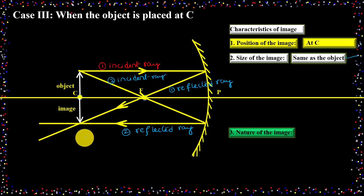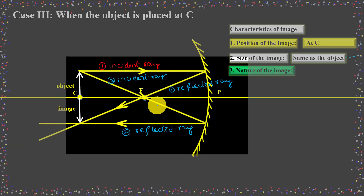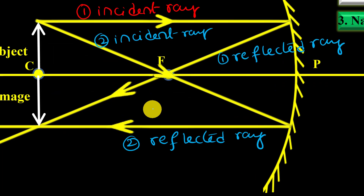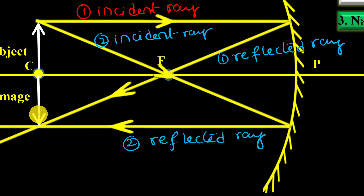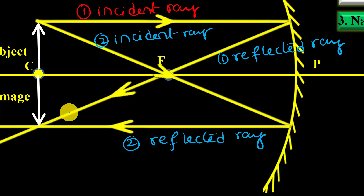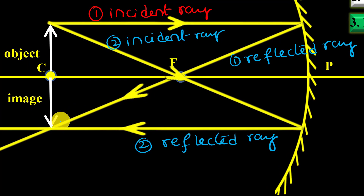Next, the nature of the image. If I observe the ray diagram, the two reflected rays are converging and they are producing an image. If the reflected rays converge and produce an image, we call it a real image — because a real image is produced by converging rays. Here also, the two reflected rays are converging and producing an image. So the nature of the image is real and inverted.